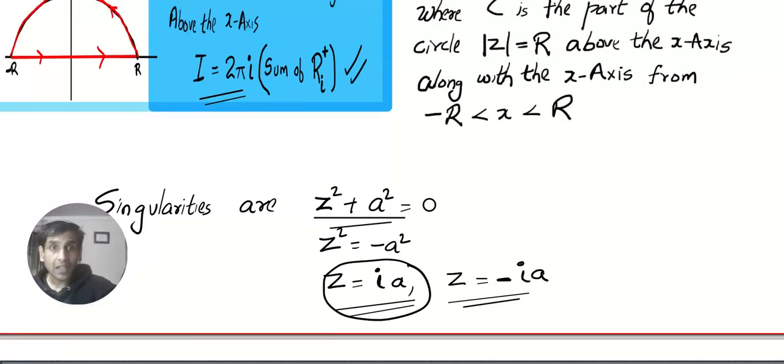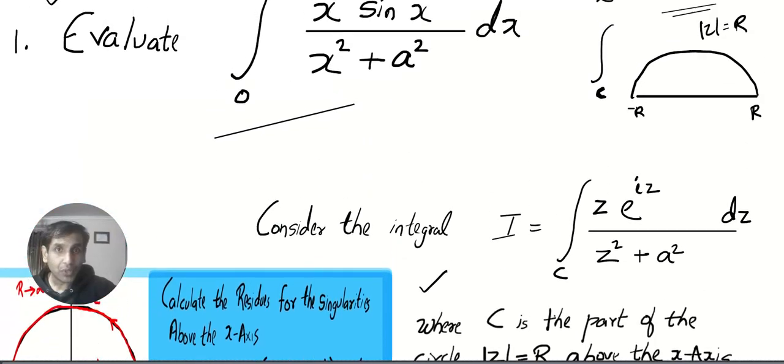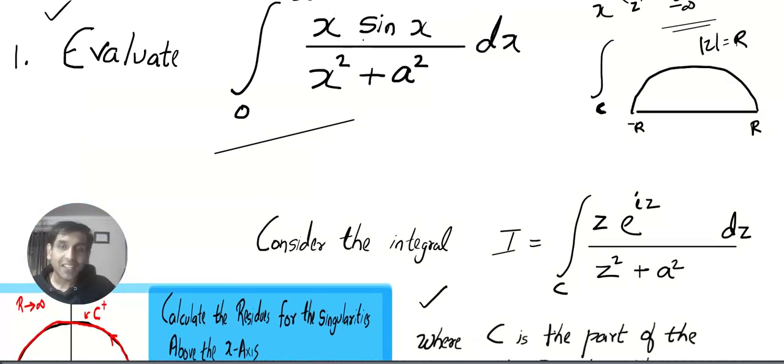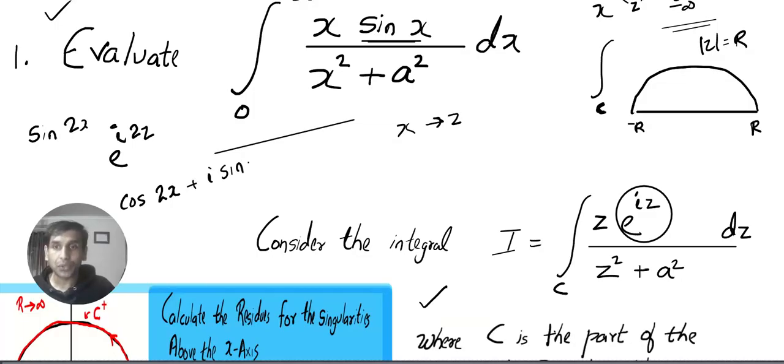What are the singularities? The denominator equal to 0. So I got two singularities, and since the contour is same, we will consider only the singularity above the axis. I don't know how many of you noticed one very important thing: in Type 1, I asked you to replace every x with z, but here I did something else. Suppose they give you cos 2x, so you will write e^(i·2z) because this will be equal to cos 2z plus i sin 2z.